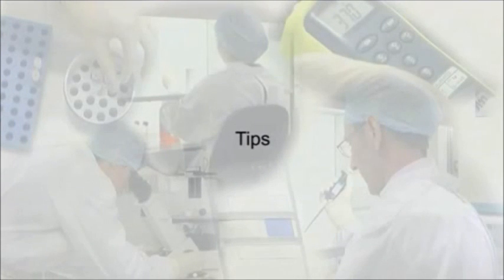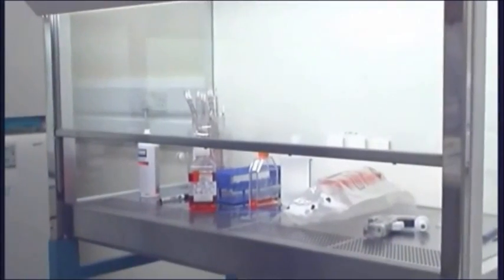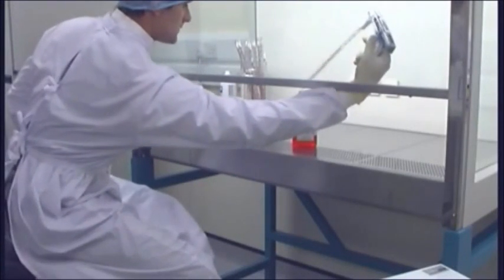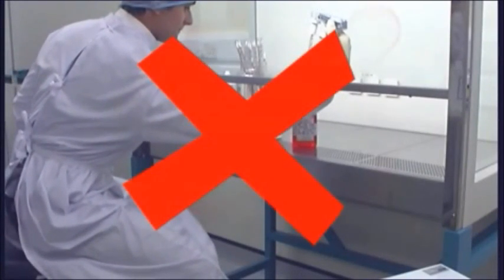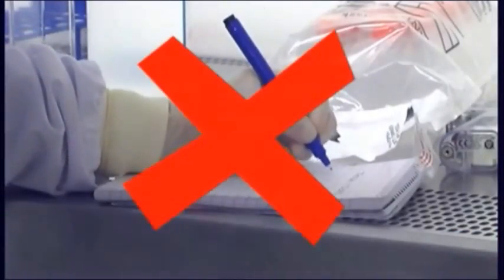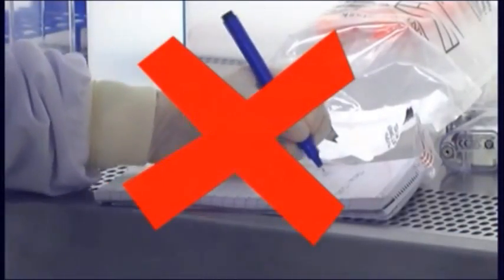Observe these tips to work effectively with the safety cabinet. Keep the cabinet clear of unwanted items. Work as near to the center of the cabinet as possible and at least 15 centimeters from the front. Do not obstruct the air inlet grills.